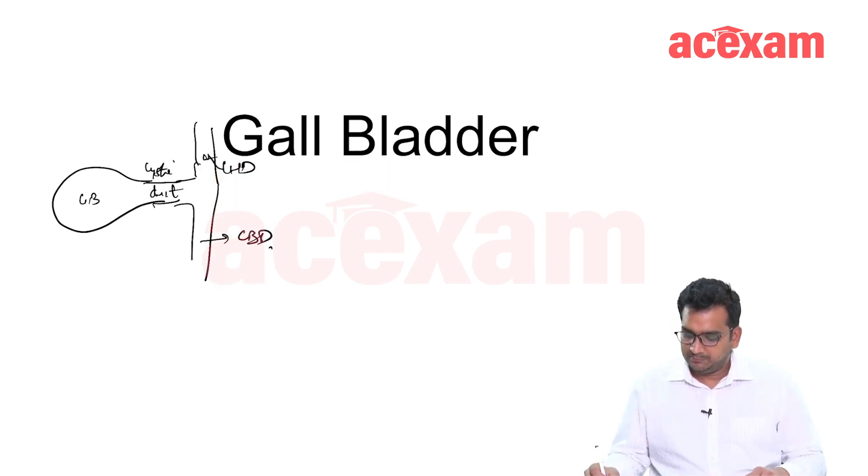Now regarding the parts of gallbladder, this is fundus, this is body and this is neck and there is cystic duct which joins the CHD.